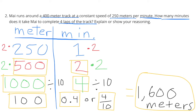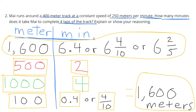So we have 1600 meters on the left, and we have the two minutes it takes to go 500 meters, the four minutes it takes to go 1000 meters, and the four-tenths of a minute it takes to go 100 meters. If we add all those up, we'll find that it takes six and four-tenths of a minute to go 1600 meters.